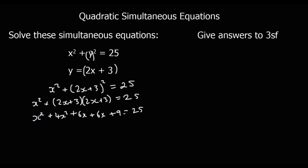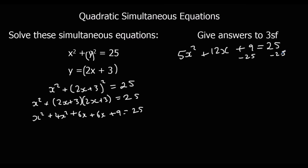Collecting like terms: x squared plus 4x squared is 5x squared, and 6x plus 6x is 12x, plus 9 equals 25. Taking 25 off both sides to make it equal to 0 gives 5x squared plus 12x minus 16 equals 0.